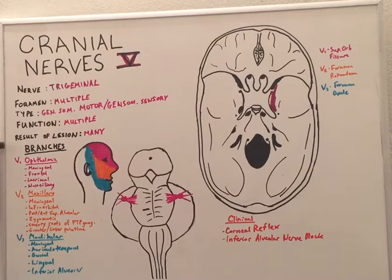So there are many different branches to the branches of the trigeminal nerve and some of the main ones have been listed here. In the ophthalmic branch we further subdivide to meningeal, frontal, lacrimal, and nasociliary. The maxillary further subdivides into meningeal, infraorbital, posterior, anterior, superior, alveolar, zygomatic, sensory roots of the pterygopalatine ganglia, and greater and lesser palatine. And in the mandibular we have meningeal, auriculotemporal, buccal, lingual, and inferior alveolar.